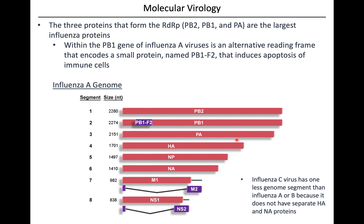Here's a quick overview of the eight genome segments in influenza A. Segments 1 and 2 encode PB1 and PB2; segment 1 also has an alternative reading frame for the F2 protein, which can induce apoptosis of immune cells. Segment 3 encodes PA, segment 4 encodes HA, segment 5 the nucleocapsid protein, and segment 6 encodes NA. Segments 7 and 8 encode M1 and NS1, with alternate reading frames giving M2 and NS2. Influenza C has one less segment because it doesn't have separate HA or NA proteins.